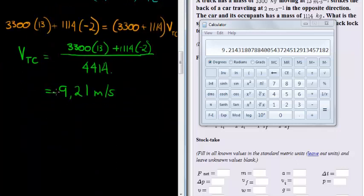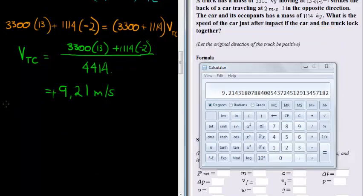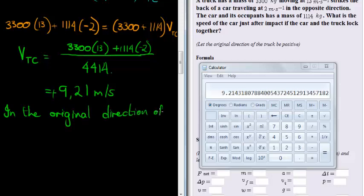So we have 3,300 times 13 plus 1,114 times negative 2, divided by 4,414. And that gives me 9.21 meters per second. In which direction? Well, it's positive. So it's in the original direction of the truck. That makes sense, doesn't it?